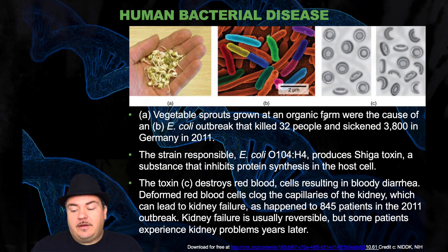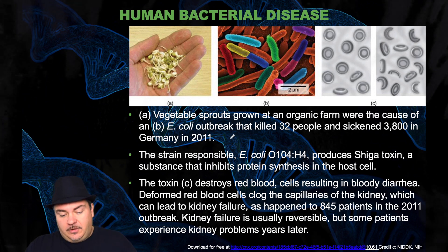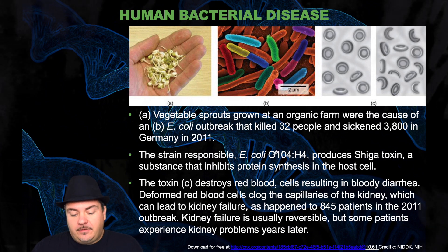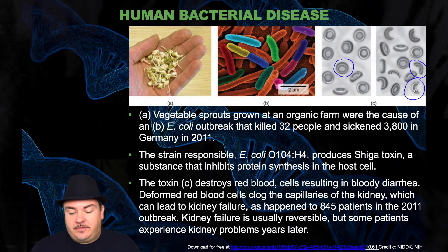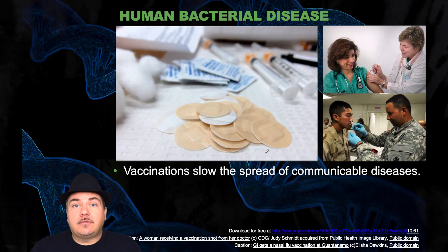Vegetable sprouts grown on an organic farm were the cause of an E. coli outbreak that killed 32 people and sickened 3,800 in Germany in 2011. The strain responsible produces Shiga toxin, a substance that inhibits protein synthesis in the host cell. The toxin destroys red blood cells — instead of their normal dish shape, the damaged red blood cells are deformed and clog the capillaries of the kidney, which can lead to kidney failure.